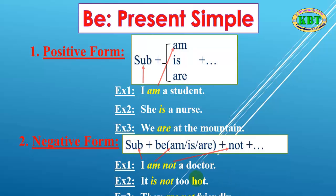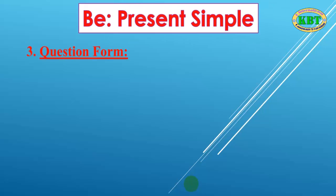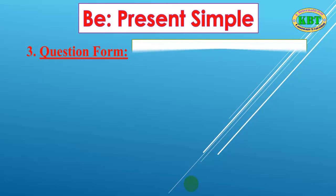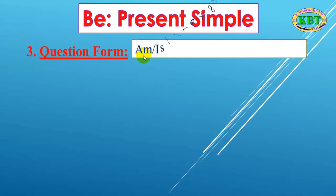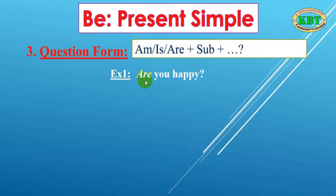Let's go to the question form. In the question form, we put the verb to be before the subject — so: am/is/are + subject + ... + question mark. Example number one: 'Are you happy?' Are is the verb to be, you is the subject, happy is the adjective, and we add a question mark.